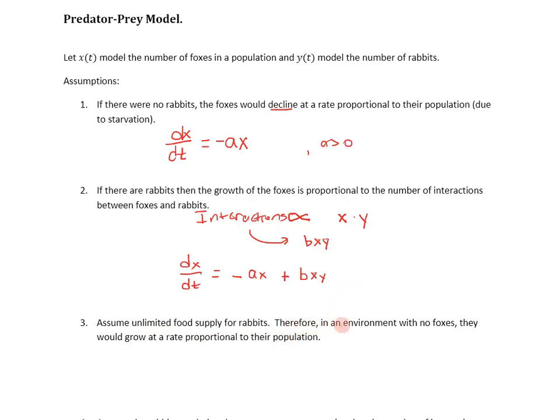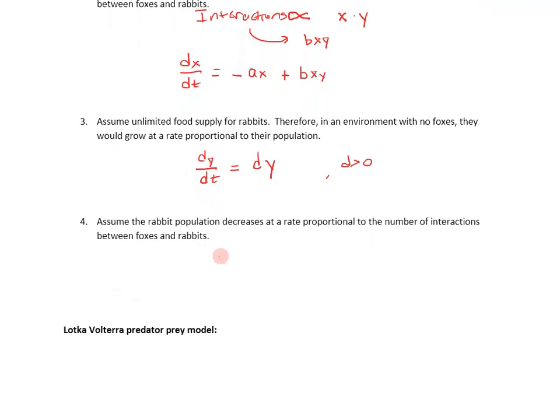Now y being dependent on t also, that is, it's going to change over time, the number of rabbits is. We want to consider what assumptions can we make about how the rabbits will change in terms of their population. So let's assume an unlimited food supply for rabbits. So therefore, in an environment where there are no foxes, they would grow at a rate that's proportional to their population. So when there are no foxes, dy/dt would be like Ky. And instead of using a K, I'm going to use the letter D. So D is just the constant of proportionality. And now D is a positive number, unlike A, which A being positive, I should say, not unlike A, but exactly like A, that's going to be a positive coefficient. But whereas the foxes would decline over time without any rabbits, the rabbits would grow exponentially since there are no foxes to curb their population to eat them up as they grow, right?